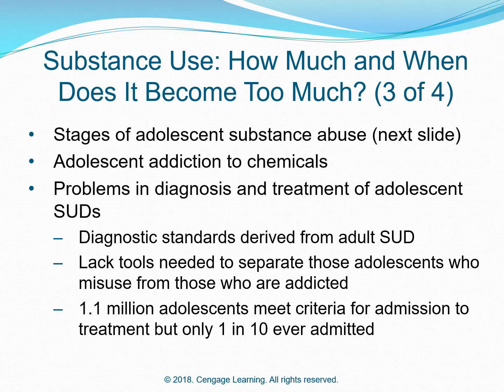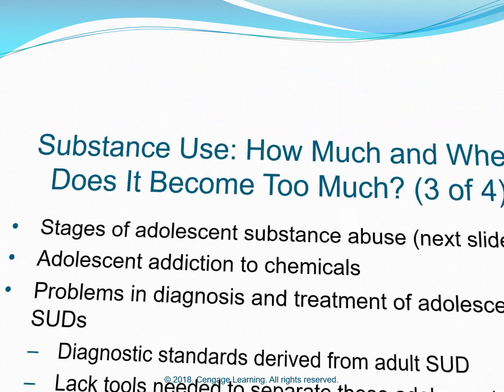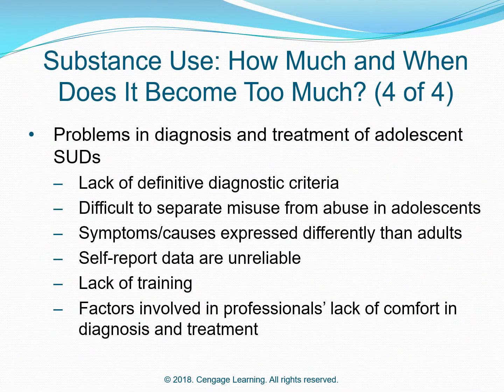Adolescent addiction to chemicals — problems in diagnosis and treatment of adolescent SUDs: Diagnostic standards are derived from adult SUDs. There is a lack of tools needed to separate those adolescents who misuse from those who are addicted. 1.1 million adolescents meet criteria for admission to treatment, but only 1 in 10 is ever admitted. Additional problems include lack of definitive diagnostic criteria, difficulty separating misuse from abuse in adolescence, substance causes expressed differently than in adults, unreliable self-report data, and lack of training and comfort in diagnosis and treatment among professionals.